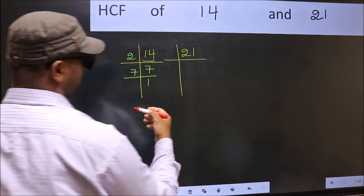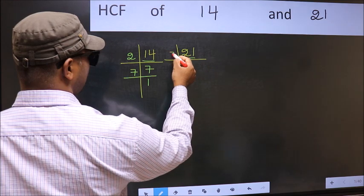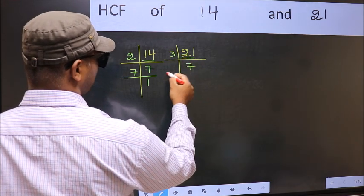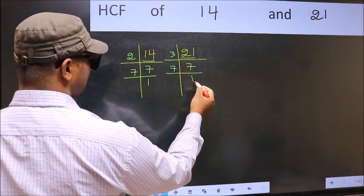The other number 21. 21 is 3 times 7 is 21. 7 is a prime number so 7 times 1 is 7.